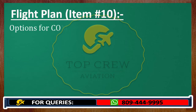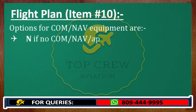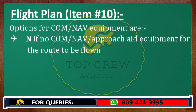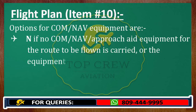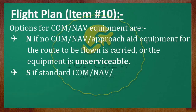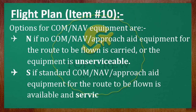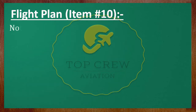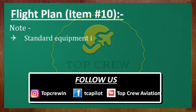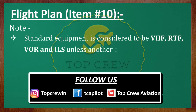Options for communication and navigation equipment are: N, if no communication, navigation, or approach equipment for the route to be flown is carried, or the equipment is unserviceable — we would always have to mention N as in November. S, if standard communication, navigation, and approach equipment for the route to be flown is available and serviceable. Note: standard equipment is considered to be VHF RT, VOR, and ILS, unless another combination is prescribed by Aviation Authority local regulations.